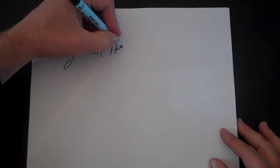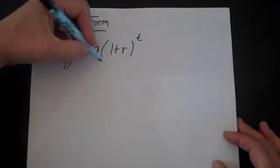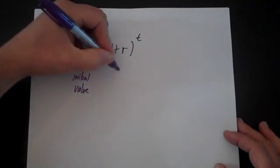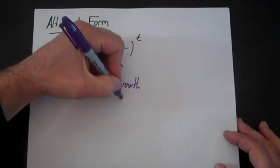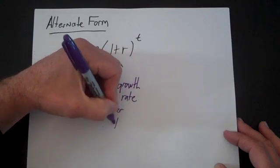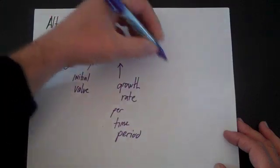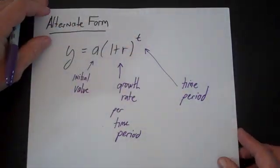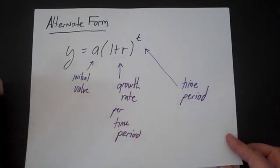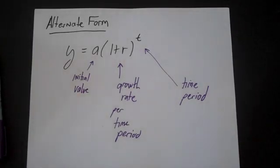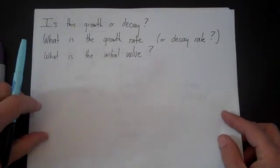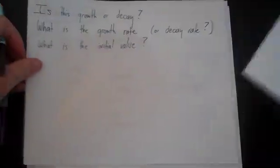Same function, let's just rewrite it. We're going to write it as y is equal to a times (1 plus r) to the t. In this case, a again is the initial value, r is the growth rate per time period, and t is the time period. You still have a function in y and x, but since x is usually going to be time, we can rewrite it as t. Using that form, you can answer three quick questions on any function: is this a growth or decay problem, what is the growth rate or decay rate, and what is the initial value?